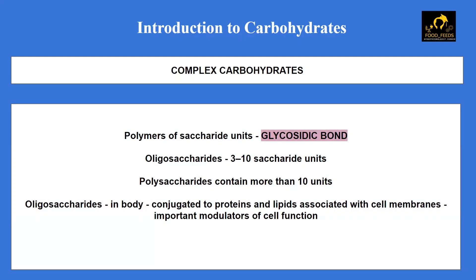We all know that complex carbohydrates are the major component of a human diet. In our body, oligosaccharides are present in a conjugated form with proteins and lipids, which are associated with the cell membranes. When present on the cell surface, these conjugated oligosaccharides act as important modulators of cell function.